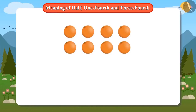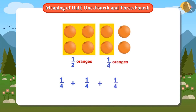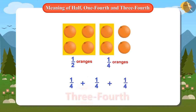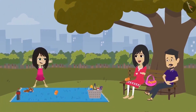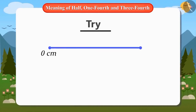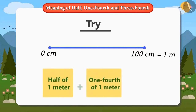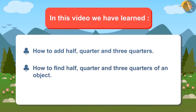It means mummy and papa have three quarters. Now Neha is even happier because she can add half and quarter objects. In this video, we have learned how to add half, quarter, and three quarters, and how to find half, quarter, and three quarters of an object. Now you can also try — add half and a quarter of a metre and find out how many centimetres it will be.